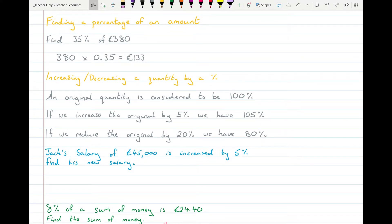Increasing or decreasing an amount by a percentage. The original quantity that you start with is said to be 100%. If you want to increase it by 5% you'd go to 105%, or if you wanted to reduce it by 20% you'd come down to 80%. So here's an example where Jack's salary of €45,000 is increased by 5%. Find his new salary. €45,000 is his 100%, and we want to increase it by 5%, so that means his new salary is going to be 105%. So 105% as a decimal is 1.05. You can put that into your calculator and he's going to be making €47,250, and include your units on that.